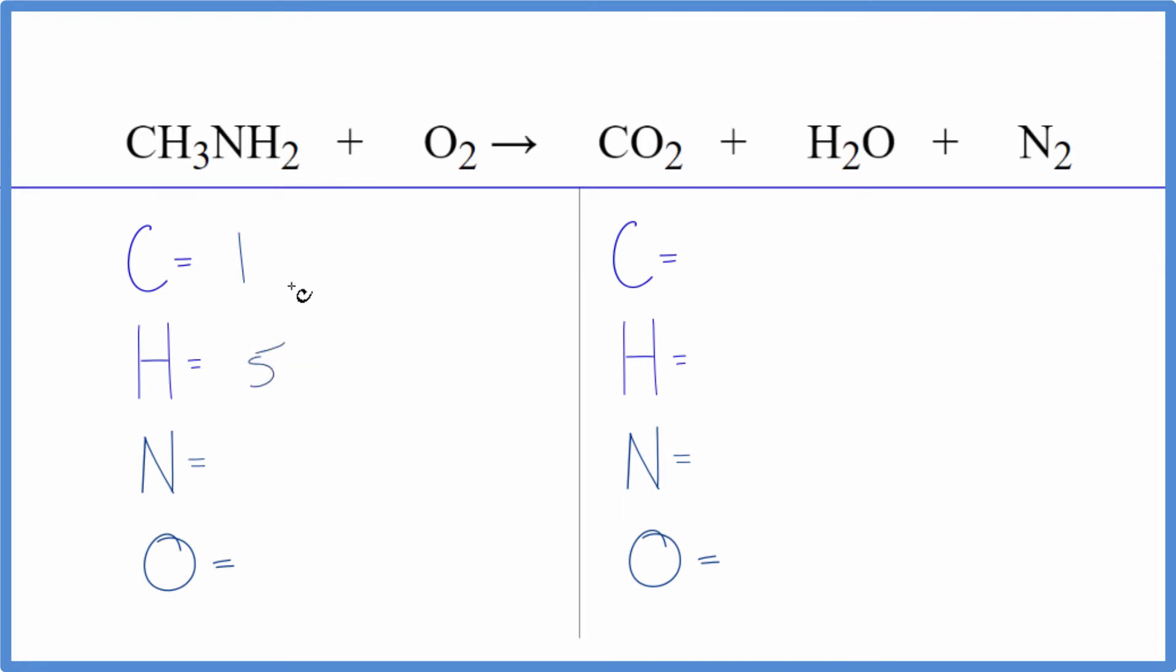Make sure you count these two. One nitrogen and then two oxygen atoms. On the product side we have one carbon, two hydrogens, two nitrogens, and then oxygens we have two plus one that gives us three.